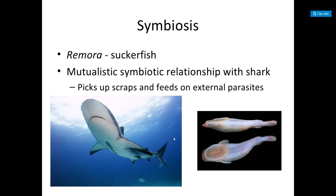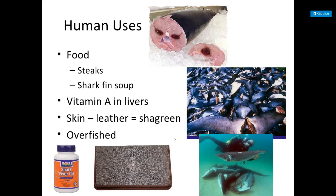Symbiosis: the remora or sucker fish has a mutualistic symbiotic relationship with sharks — it picks up scraps and feeds on external parasites. However, this can swing into parasitism if too many remoras attach and damage the shark's skin, making it hard to swim. Human uses of sharks include shark fin soup, steaks, vitamin A from the liver, fish oils, and leather from the skin. They are often overfished.